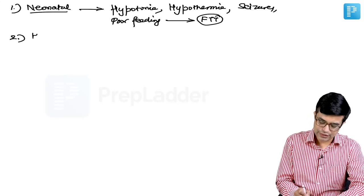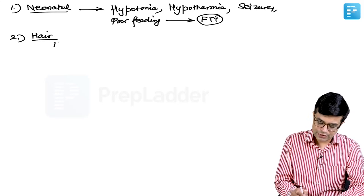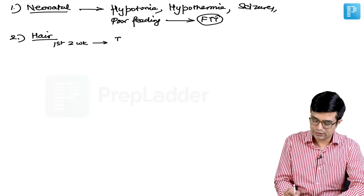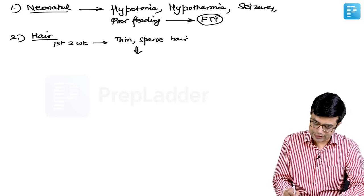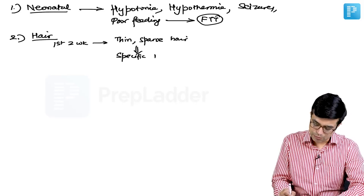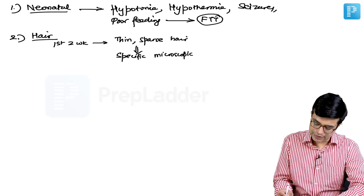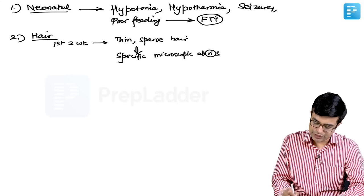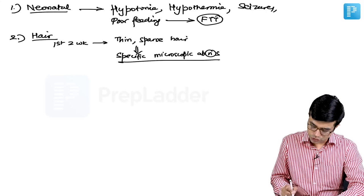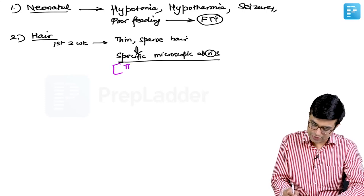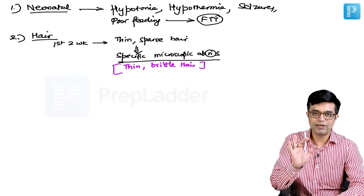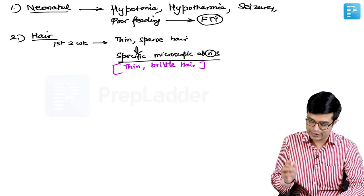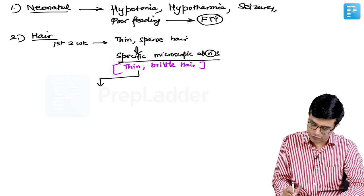Secondly, you will find that there are hair abnormalities. In the first two weeks of life you will only find thin sparse hair. Later on you will find that there are specific microscopic abnormalities which appear in these individuals. All these microscopic abnormalities will be characterized by thin brittle hair, but the microscopic pattern will be different in all the three entities.